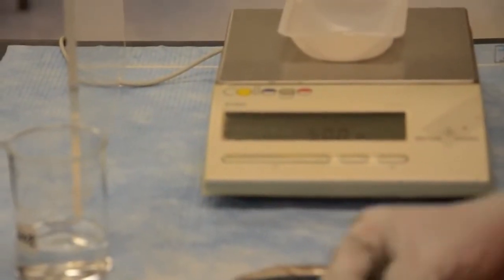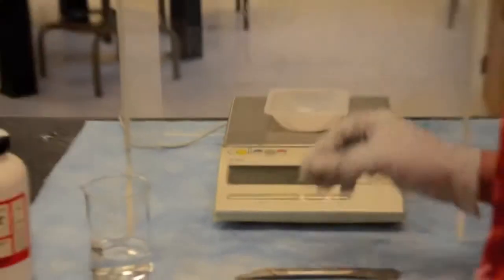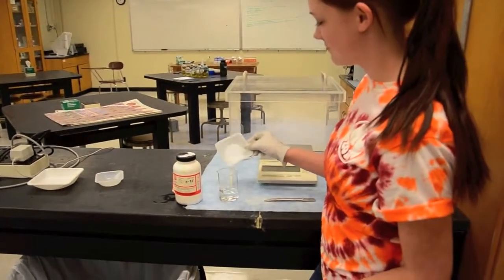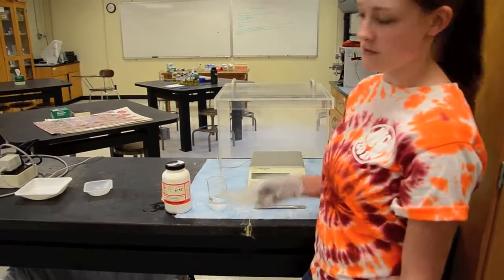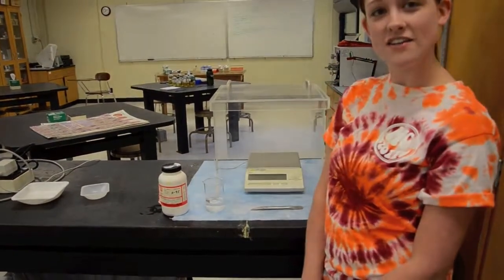Now that we've added exactly 5 grams of our table salt, we're going to add it to our solution. Always properly discard the weigh boat. And that's how you use a balance.